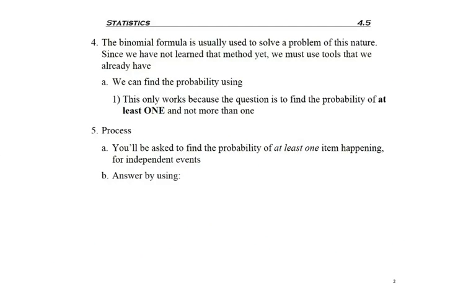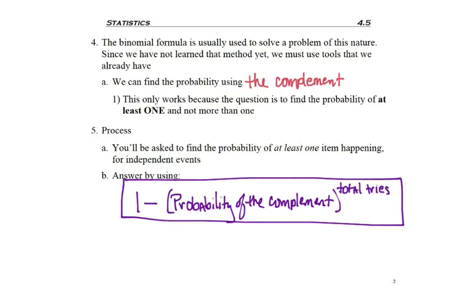So to solve the probability where we select at least one dog, we would need the binomial formula, but we haven't learned that yet. So we are going to be able to find this probability, but specifically by using the complement. The secret, though, is we can only do this for probabilities that ask for at least one dog or whatever the item is. If it's at least three dogs, the complement is going to be too complex to use. So what will happen is we'll have a probability question for at least one item happening. Also, it has to be independent events, so with replacement or 5% or less of the population. And what we'll do is use the formula: 1 minus the probability of the complement to the total number of tries.